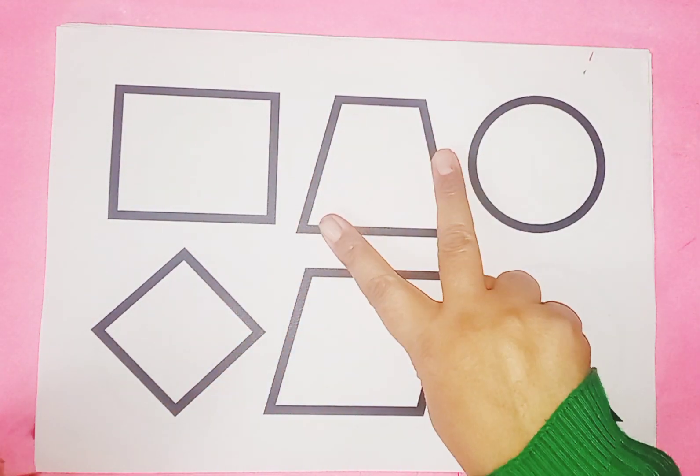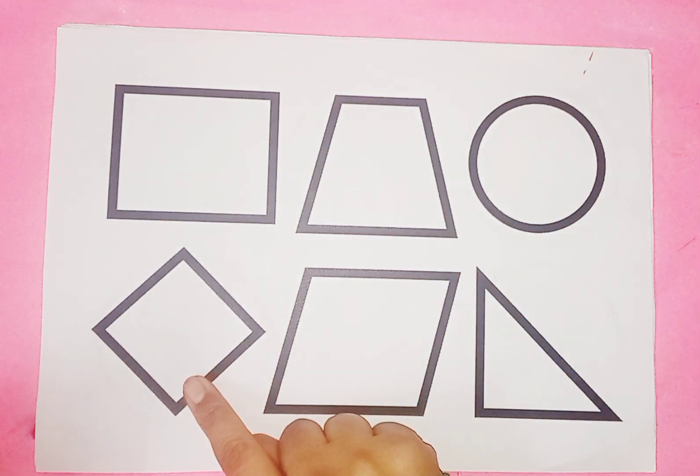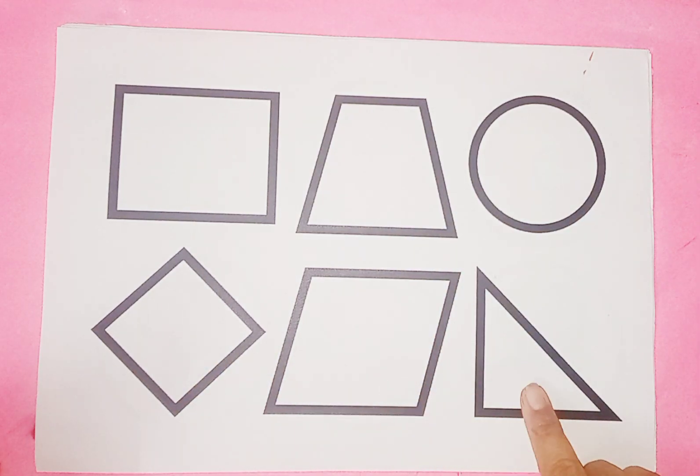Now we learn some 2D shapes: rectangle, trapezium, circle, rhombus, parallelogram, right triangle.